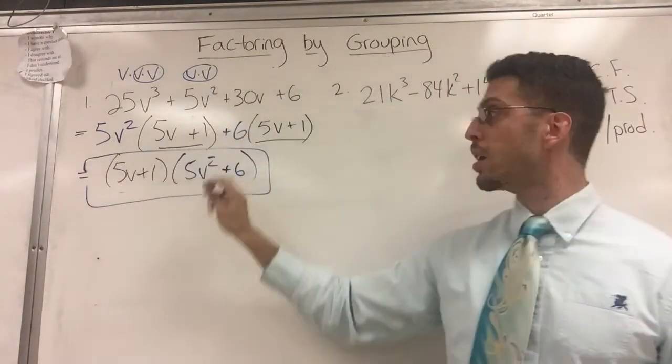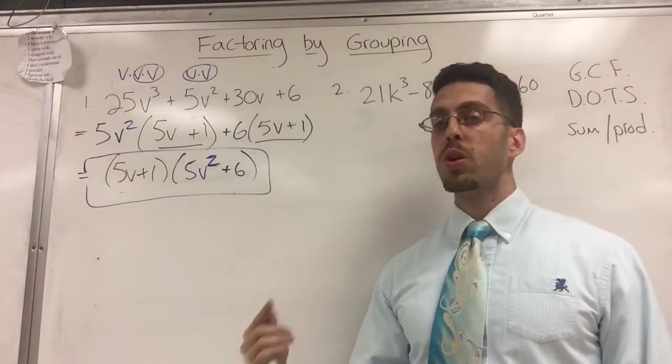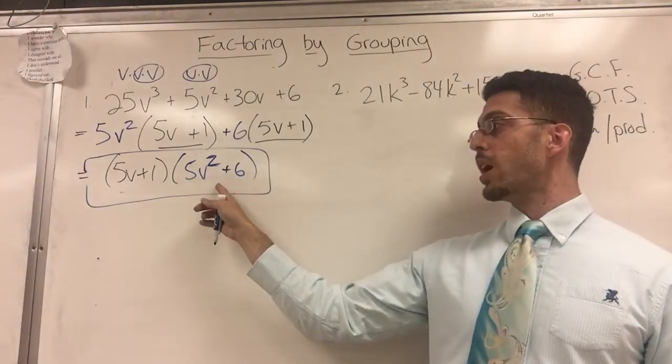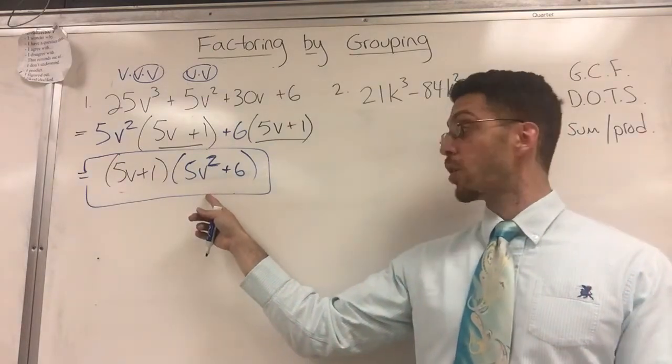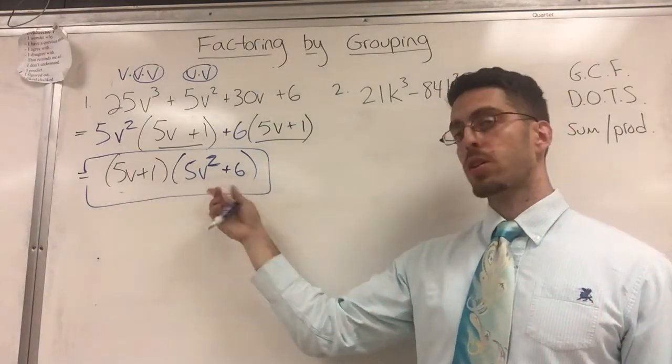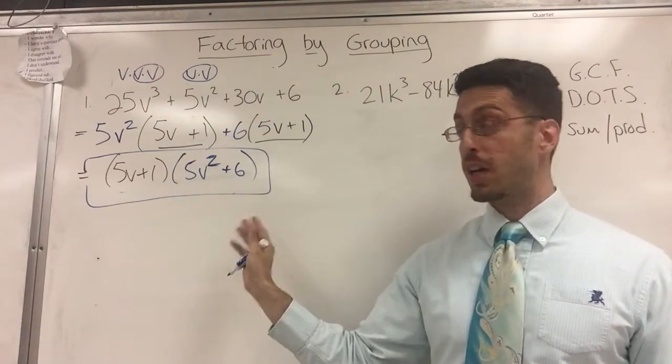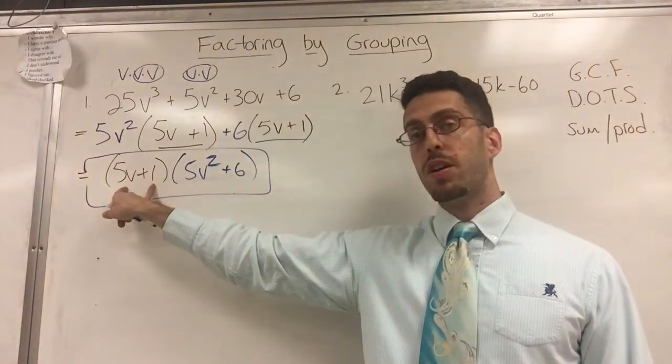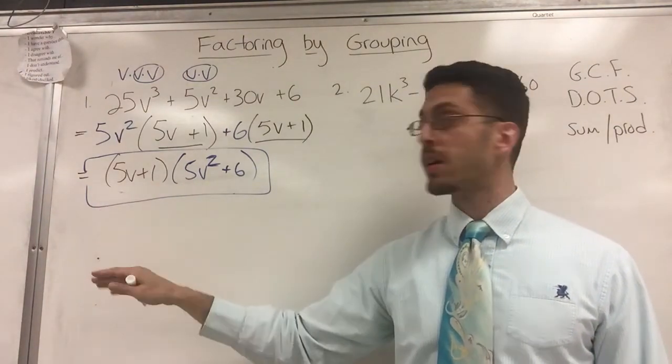You have factored completely. This is a square, by the way. And if it was more complicated, you could point that out and say, hey, look, this is a quadratic. Now I can use dots or sum product. But in this particular case, you can't. It can't be factored any further. You can check, but here it can't. Or you can say, is there a GCF here? There's not, so you're done. If there was a GCF, you'd have to go further. But we're good.